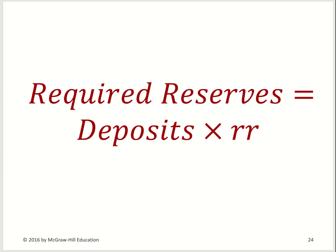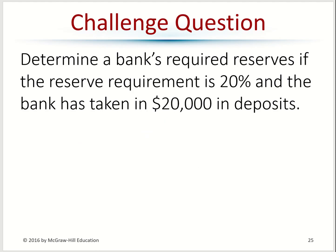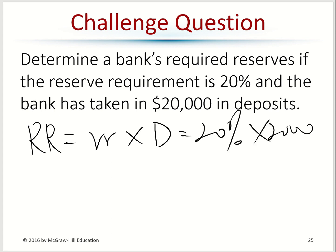To find the required reserve, take total deposit times the required reserve ratio. For example, if your deposit is $100 and the ratio is 10%, then $10 must be kept in the bank as the required reserve. Let's try another example: deposit is $20,000, required reserve ratio is 20%. Required reserve equals 20% times $20,000, which gives $4,000.